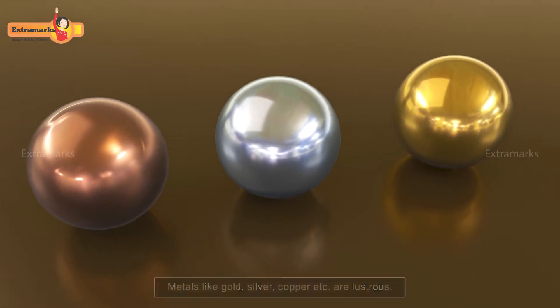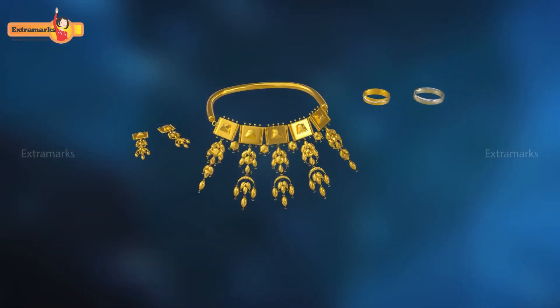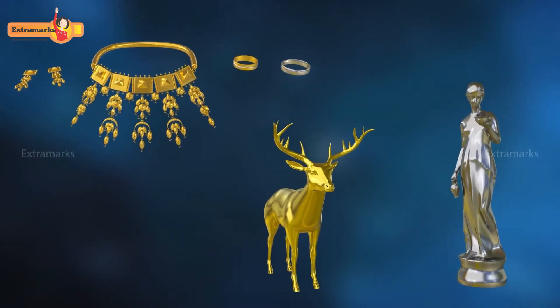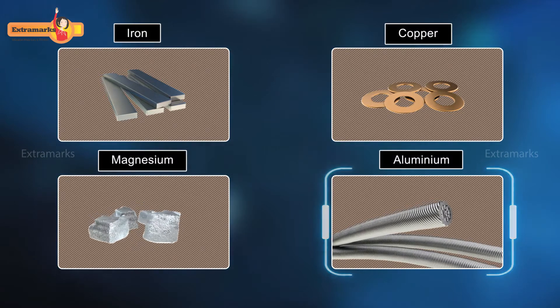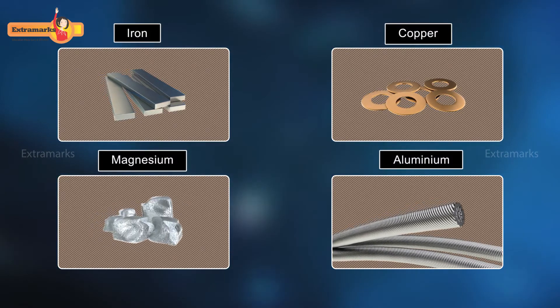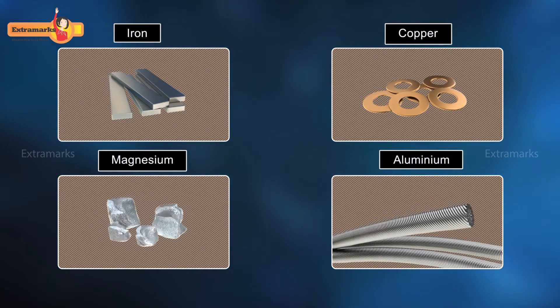Due to this, metals are used in making jewelry and statues. Shown here are four metals: iron, copper, magnesium, and aluminum. Just by looking at them, we can say that metals have shiny surfaces.